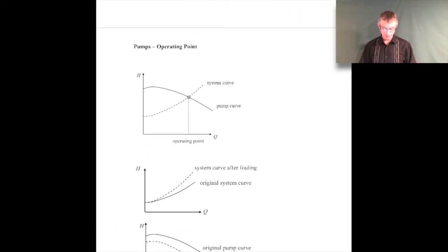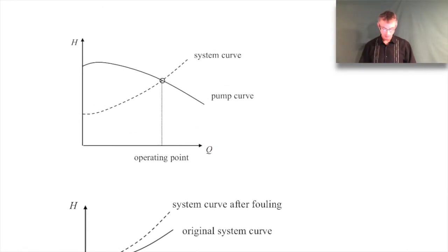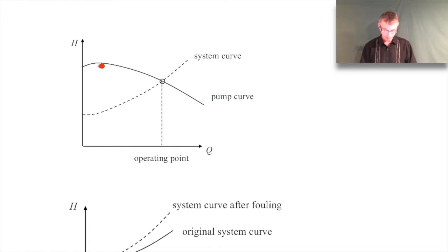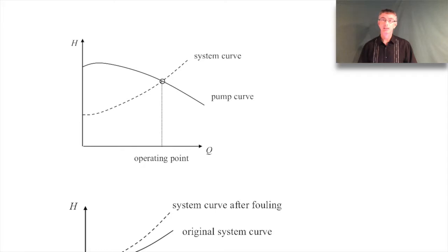So what we're going to talk about today is finding the operating point for a pump in a pipe system - it's a pretty straightforward topic. What we'll do is focus on the pump performance curves - this kind of head rise as a function of flow rate. You're very familiar with the pump curve here, that's this black line, kind of an upside-down quadratic looking equation. And then we have the system curve, which is this dashed line. The system curve is a property of the system; the pump curve is a property of the pump and you get it from the manufacturer. The system curve comes from the extended Bernoulli equation.